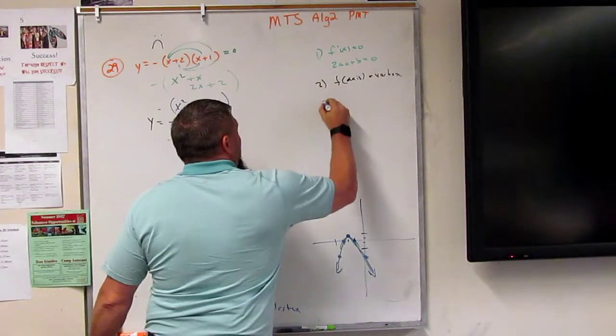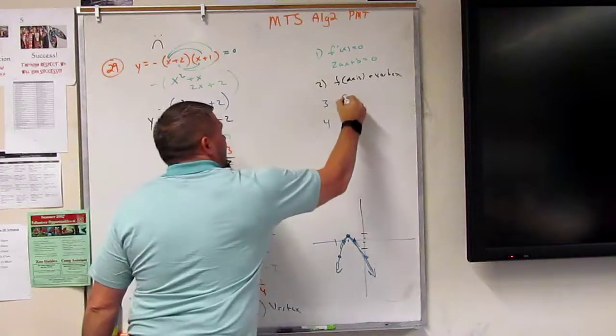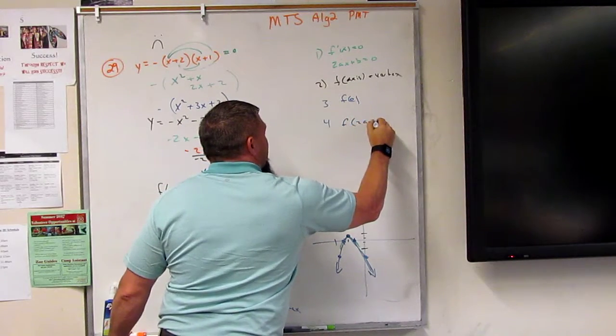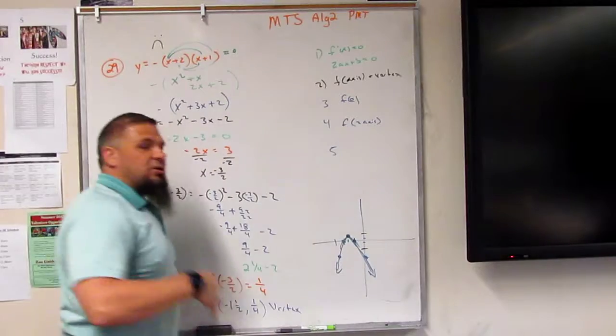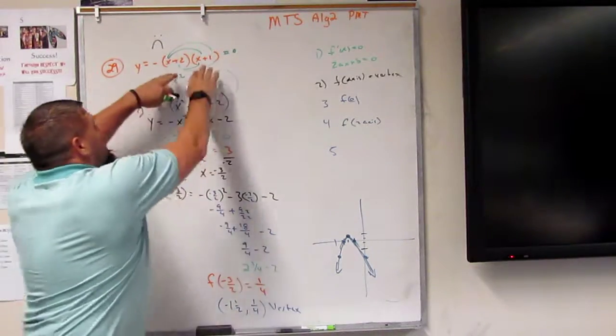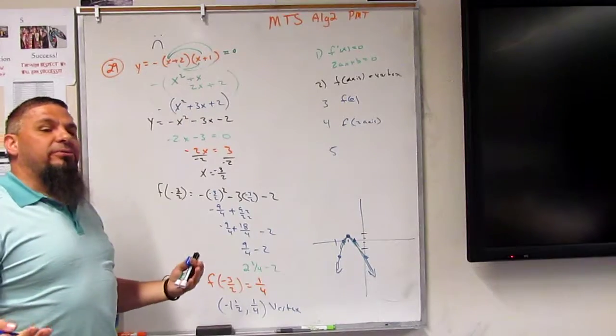Remember, the 3 and 4 was the f of 0 and the f of 2 times the axis. And then 5 is either quadratic formula or factor it. Look, it's factored.